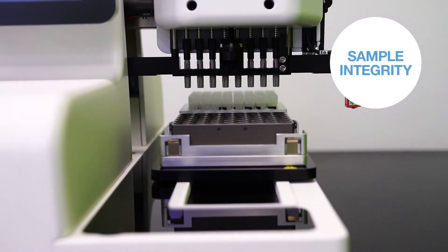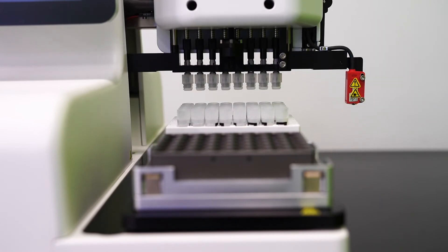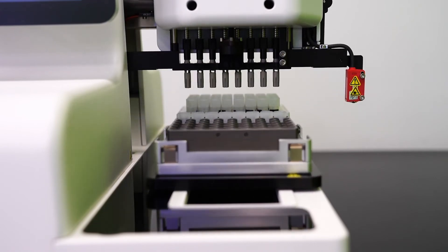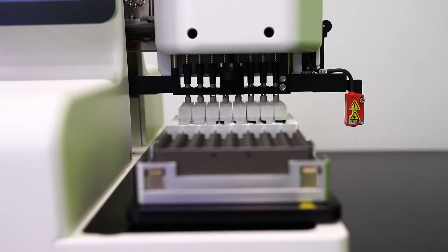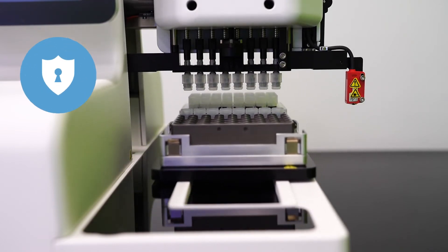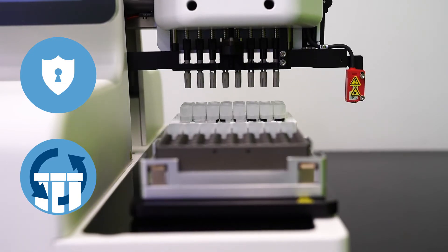Now let's talk about sample integrity. The Decapper caps and decaps in a sequence from back to front and then front to back, such that a cap will never be moved over an open tube, virtually eliminating potential cross-contamination. There are also some other built-in features, such as secure mode and row loop, which offer additional sample integrity precautions.